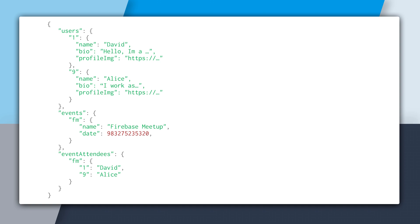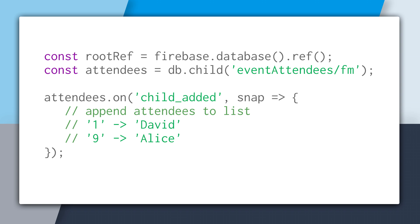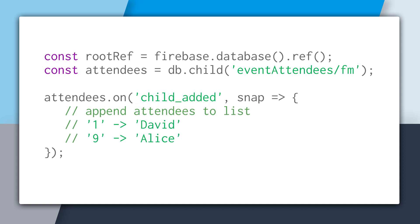So how would we do the join in this case? We would use the Realtime Database SDK, get a reference to the event attendees at the FM key, and then start doing a child_added event. This would fire back each user that is going to the event. The first time we would get a key of 1, which is David, and then a key of 9, which is Alice — but that just gives us the name and not all the other user data.